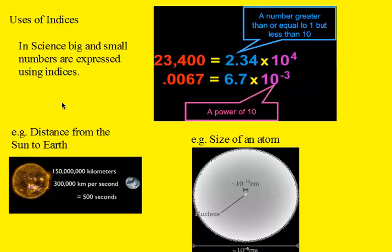And one thing we do look at in this topic, our use of indices, is in science where big and small numbers are expressed as powers of 10. Here's the idea, which we'll learn about. Big numbers expressed as a number between 1 and 10 times the power of 10. Small numbers expressed as a number between 1 and 10 times by again powers of 10. The big numbers have positive power. Small numbers have negative power.